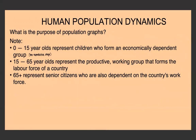Those under 15 are the pre-reproductive stage — children who form an economically dependent group. Those above 65 are senior citizens who are also dependent on the country's workforce. Between 15 and 65 is the productive working group that forms both the labor force and the reproductive class.